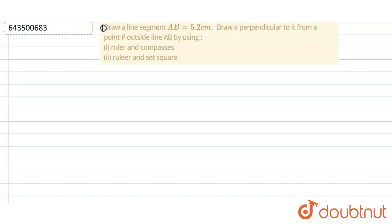We have to draw a line segment AB of length 5.2 centimeter. Draw a perpendicular on it from a point P outside the line AB by using ruler and compasses, and ruler and set square.